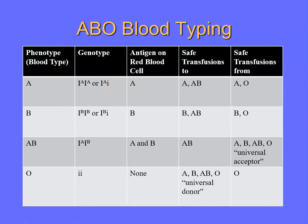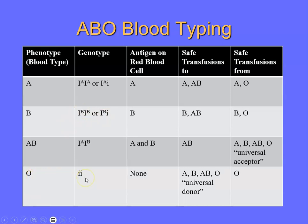For example, a person with type A blood would either be I superscript A / I superscript A, or I superscript A / lowercase i. For type B, it's similar — there are two possible genotypes: homozygous or heterozygous. The heterozygote exists because type O blood is recessive to type A and B. Type O blood has only the recessive allele, little i / little i. So there are three alleles here: I-A, I-B, and little i — which is why this is a case of multiple alleles.